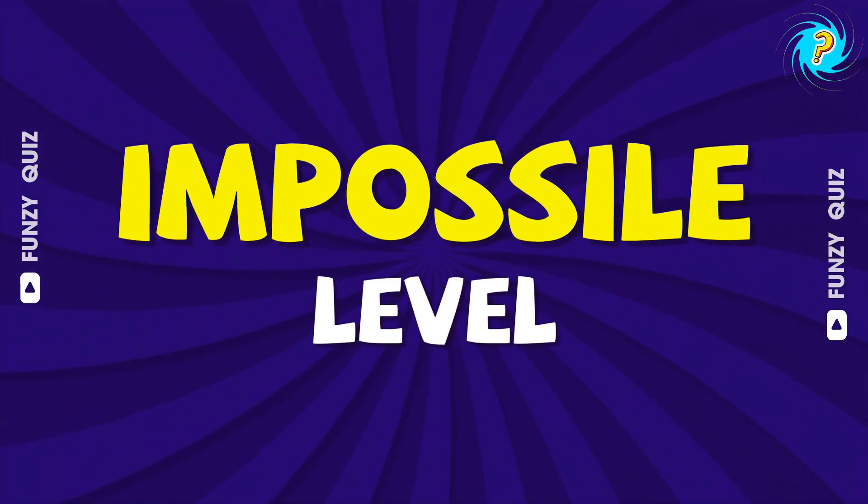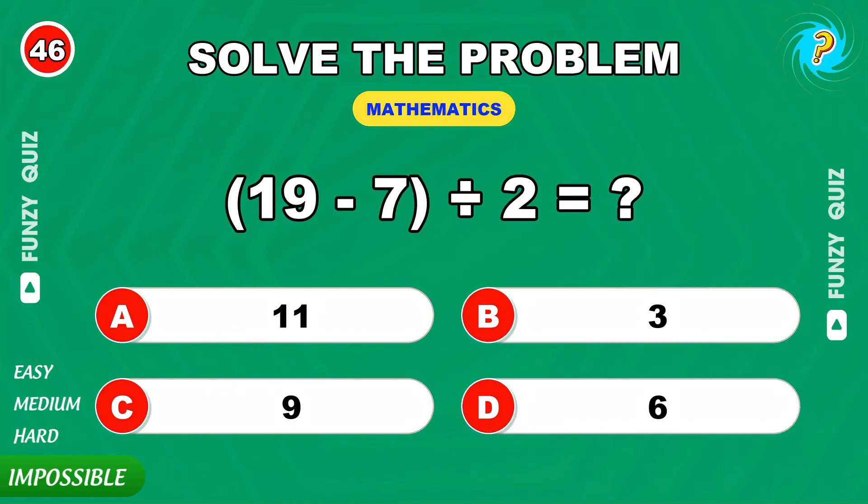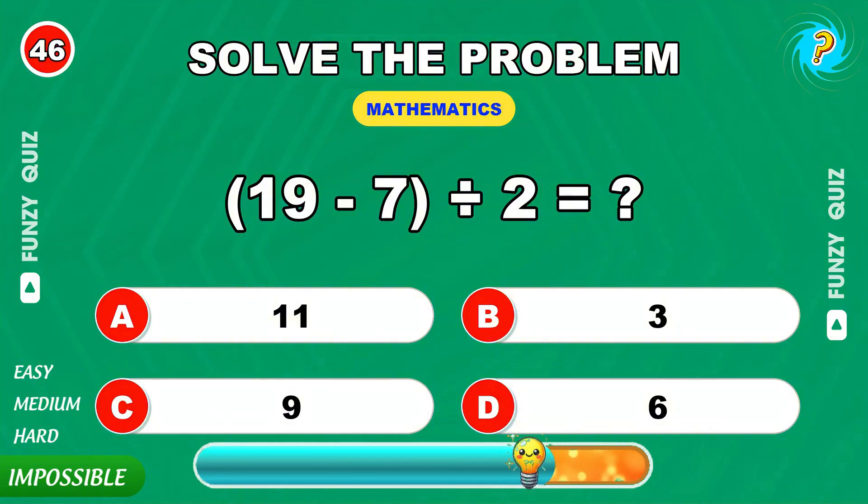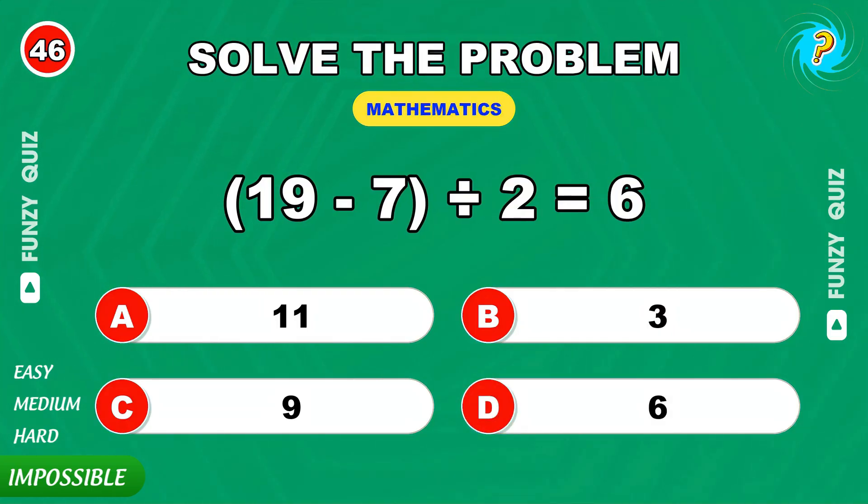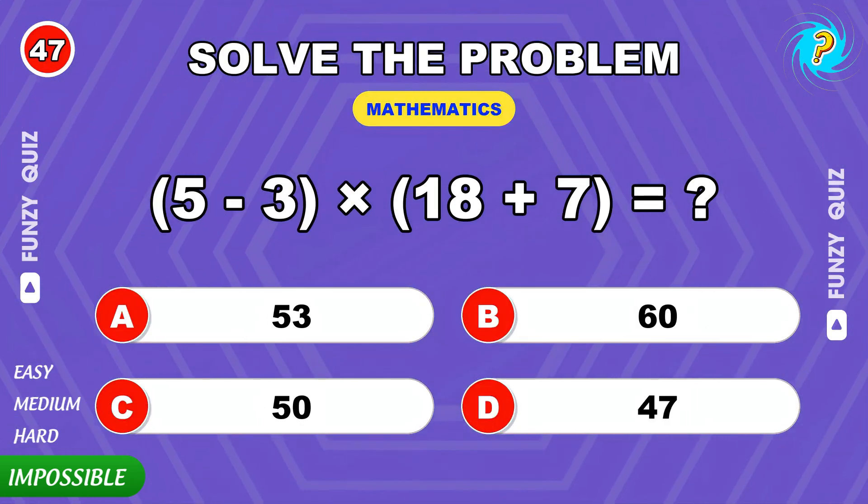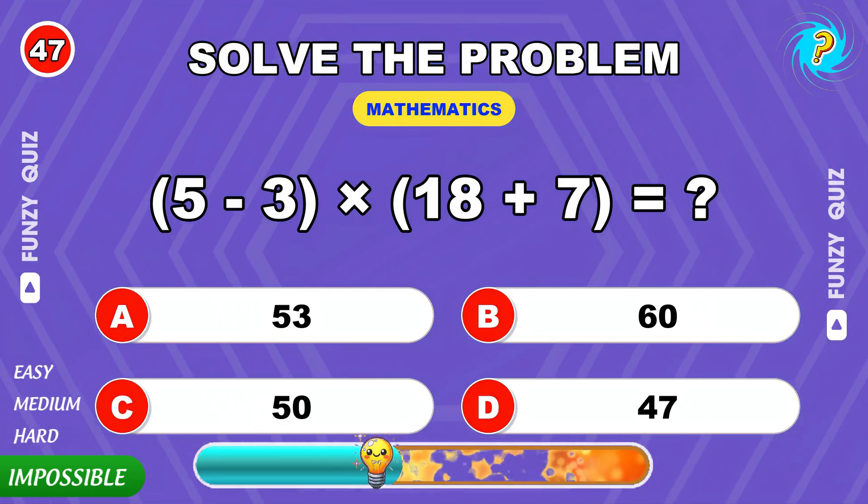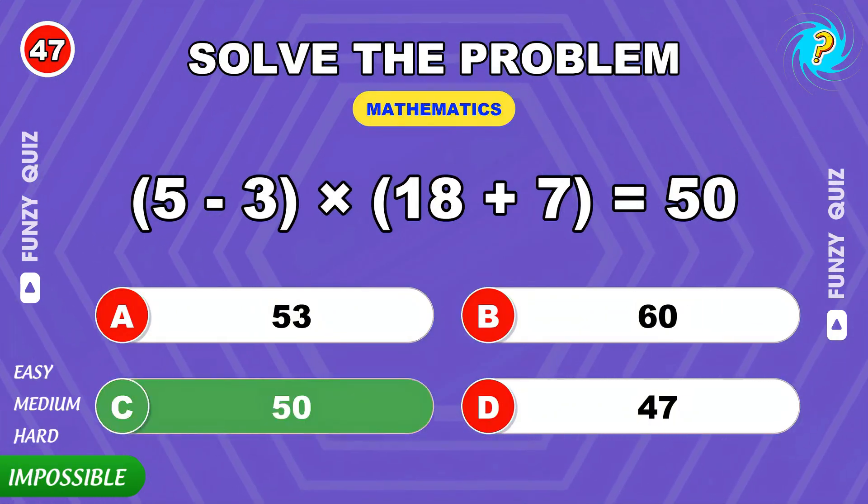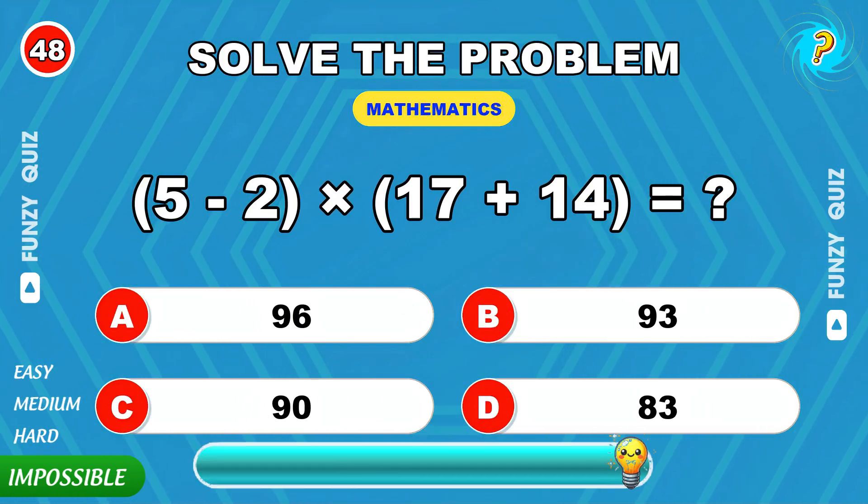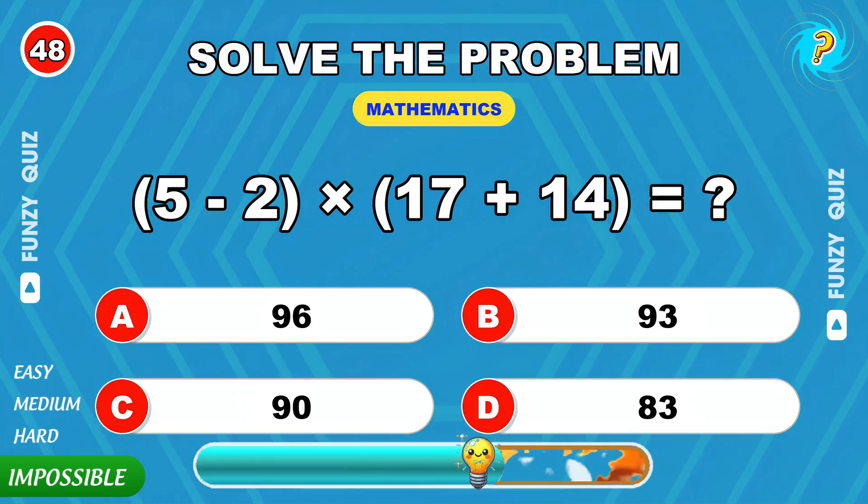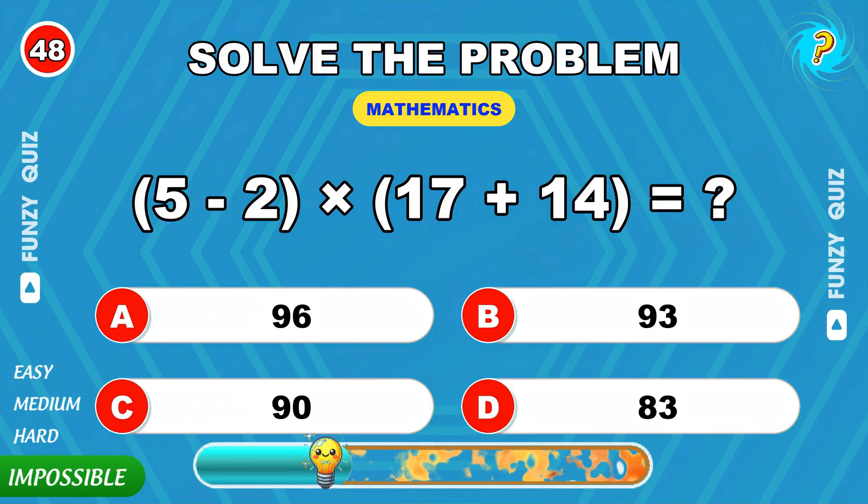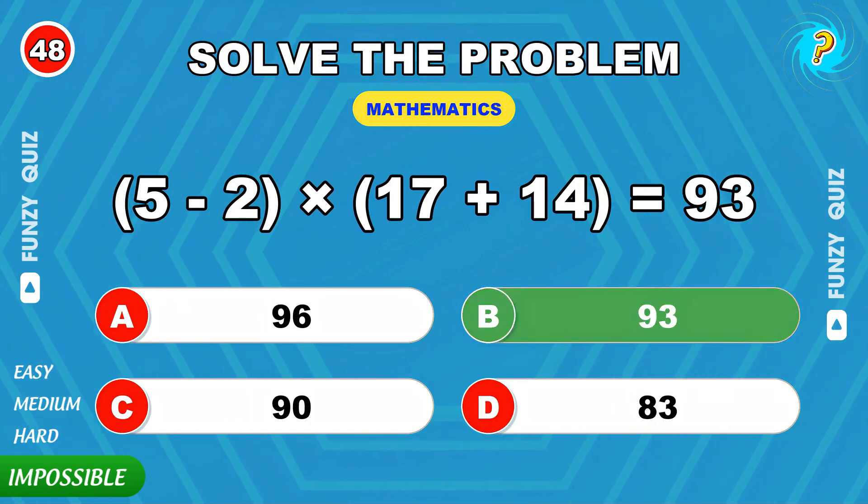Here we go for the impossible level. 19 minus 7 divided by 2. 6, outstanding. 5 minus 3 times 18 plus 7. 50. 5 minus 2 times 17 plus 14. The answer is 93.